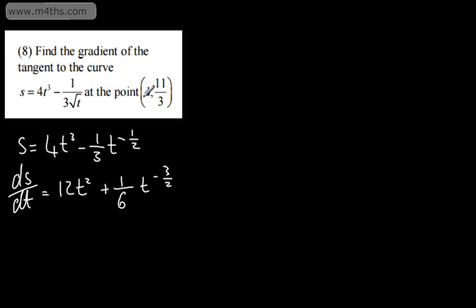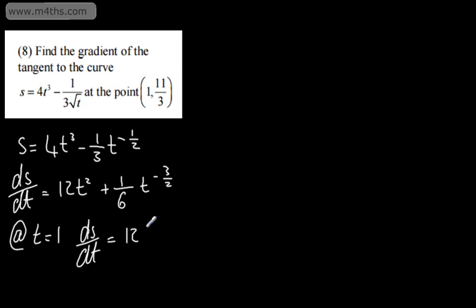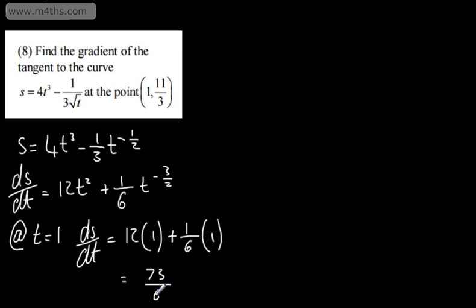Fortunately we're only evaluating at t equals 1, so those powers are essentially irrelevant. At t is equal to 1, ds dt — the gradient of the tangent to the curve at that given point — is going to be 12 lots of 1 plus 1 over 6 lots of 1. So that's going to give me 73 over 6, since 6 times 12 is 72. I'll just leave that as a top-heavy fraction.